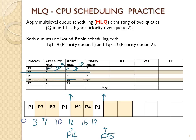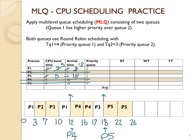At time 17, the ready queue has p1 (arrived at time 12) and p3 (arrived at time 4). We run p3 first because it arrived sooner and round-robin is first come first serve. P5, a priority 1 process, arrives at time 18, so p3 is preempted at time 18. P5 is the only level 1 process left and completes all 8 units of CPU burst, finishing at time 26. Then p1 and p3, both priority 2, round-robin with time quantum 3 until all processes finish at time 36.